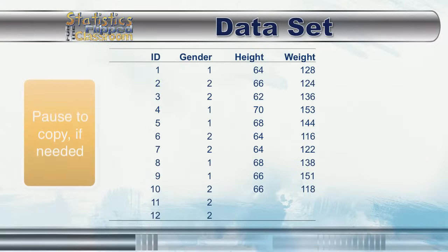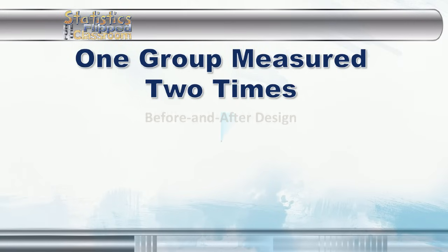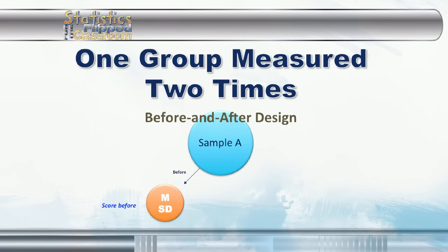We will use the data set that we created in the first video. For this research project, we have a single sample we have measured twice. You will often see this as a before and after design — you measure a group of people, then you give them a treatment, and then you measure them again a second time. If their scores on the post-test are higher than on the pre-test, you know that the treatment had an effect.